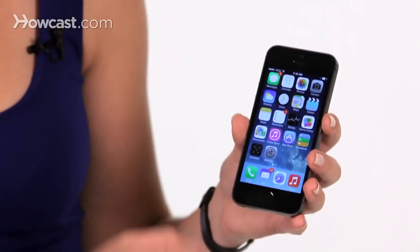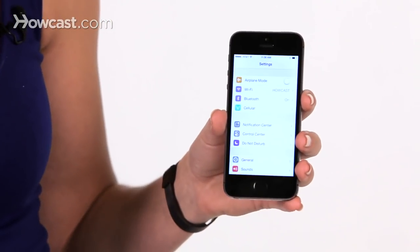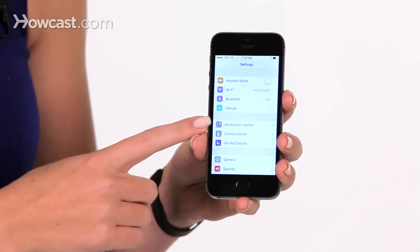Hi, Lisa here. I'm going to show you how you can set up what shows on your lock screen and your notification center. First thing you're going to do is go to your settings, and then here you're going to go to notification center.